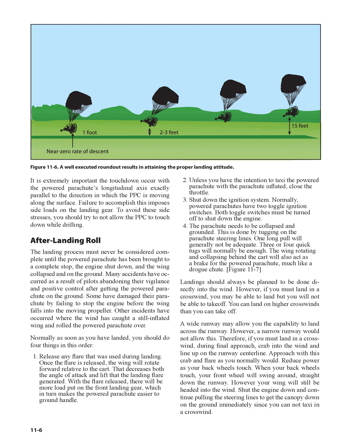After-Landing Roll: The landing process must never be considered complete until the powered parachute has been brought to a complete stop, the engine shut down, and the wing collapsed and on the ground. Many accidents have occurred as a result of pilots abandoning their vigilance and positive control after getting the powered parachute on the ground. Some have damaged their parachute by failing to stop the engine before the wing falls into the moving propeller. Other incidents have occurred where the wind has caught a still-inflated wing and rolled the powered parachute over. Normally, as soon as you have landed, you should do four things in this order.